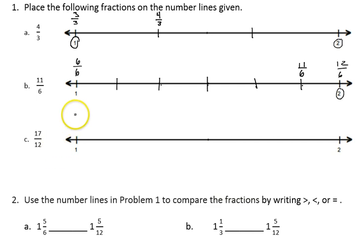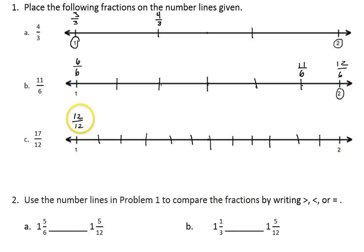When I work with my 12ths, I need to start at the 1 whole mark with 12 twelfths. I'm going to start at the halfway point, then divide each half into 3 pieces, giving me 6 on each side. That gives me my 12ths between 1 and 2. Now I need to find 17 twelfths. I start with 12 twelfths at the 1 whole point and count: 13 twelfths, 14 twelfths, 15 twelfths, 16 twelfths, 17 twelfths. So there's my 17 twelfths.